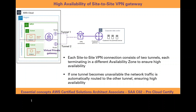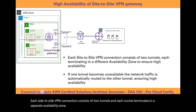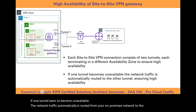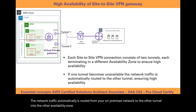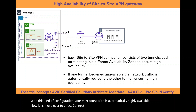One important feature of a site-to-site VPN gateway is that it is inherently highly available. Each site-to-site VPN connection consists of two tunnels, and each tunnel terminates in a separate availability zone. If one tunnel were to become unavailable, network traffic is automatically routed from your on-premises network to the other tunnel in the other availability zone, making your VPN connection automatically highly available.